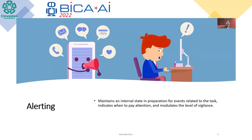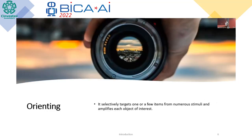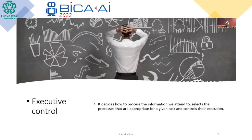Alerting basically maintains an internal state in preparation for a task, indicates when to pay attention, and modulates the level of vigilance. Orienting typically targets one or a few items from numerous stimuli and amplifies the object of interest. And finally, executive control decides how to present the information we attend to, selects the processes appropriate for a given task, and controls the execution.